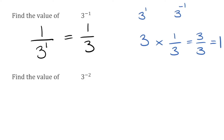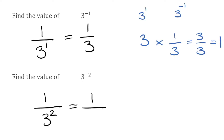For this next question, I've got 3 to the power of negative 2. I see that negative sign, so straight away I'm going to write 1 over, and then the number to the positive power — so 3 squared. Simplifying: 1 on top, 3 squared is 9 on the bottom, so that would be 1 ninth.